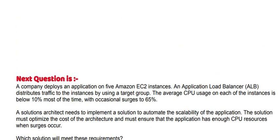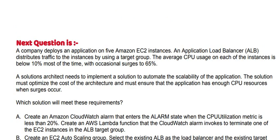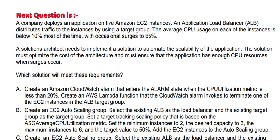A company deploys an application on 5 Amazon EC2 instances. An application load balancer distributes traffic to the instances by using a target group. The average CPU usage on each of the instances is below 10% most of the time, with occasional surges to 65%. A solutions architect needs to implement a solution to automate the scalability of the application.